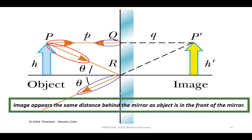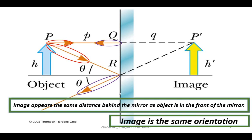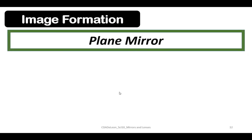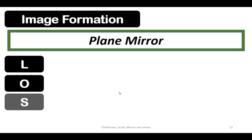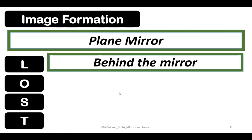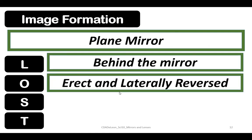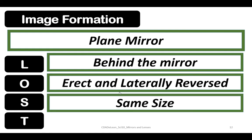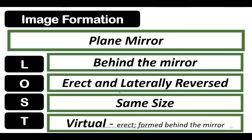By means of this method, the image appears the same distance behind the mirror as the object is in front of the mirror. The image is the same orientation and upright. In short, plane mirror has location behind the mirror, orientation erect and laterally reversed, size the same size, and virtual, which is erect and formed behind the mirror.